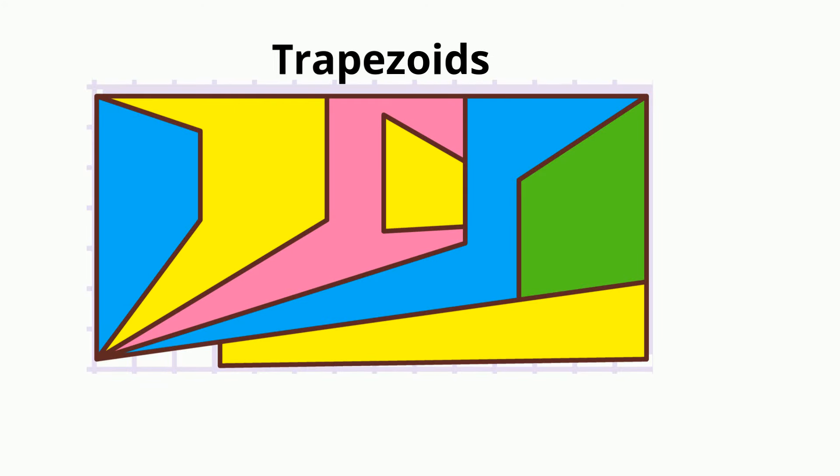Let's get back to the original question. The original picture has seven trapezoids. Here they are: one, two, three, four, five, six, and seven.